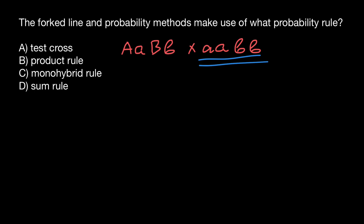Now let's talk about answer C: monohybrid rule. Actually, there is no such rule, but let me explain monohybrid cross. We have one gene A, and in a diploid organism we may have a situation when one allele is dominant and another is recessive. We call such a situation heterozygous, or we can also say hybrid. If we talk about one gene, we call this a monohybrid cross.